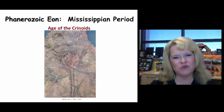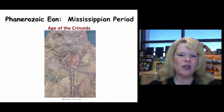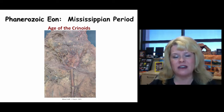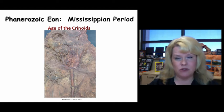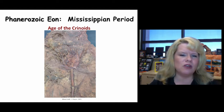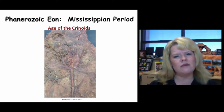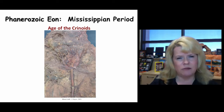Greetings geologists and welcome back. We're going to be discussing the Mississippian period today. In the United States, we separate out Mississippian and Pennsylvanian instead of calling it what the rest of the world does, which is referred to as the Carboniferous. So when you're doing research or studying online or in your book and the word Carboniferous is used, it represents the full scope of time from the beginning of the Mississippian period to the conclusion of the Pennsylvanian.